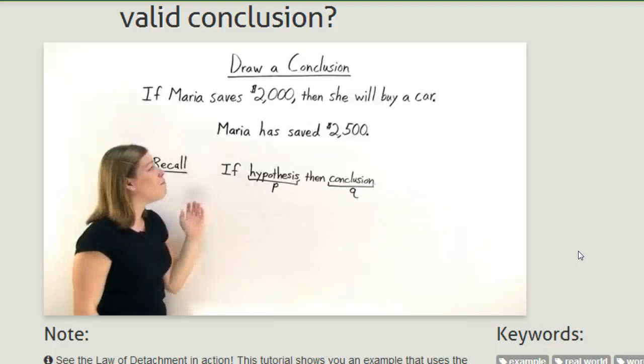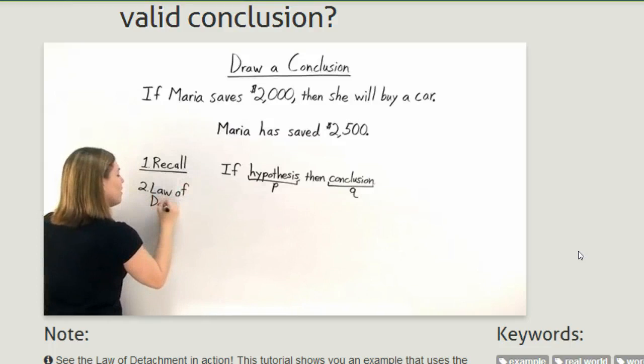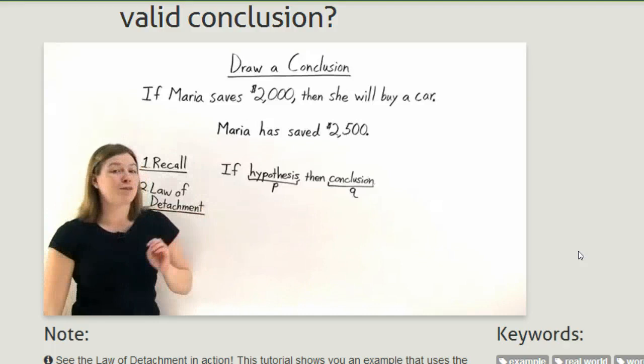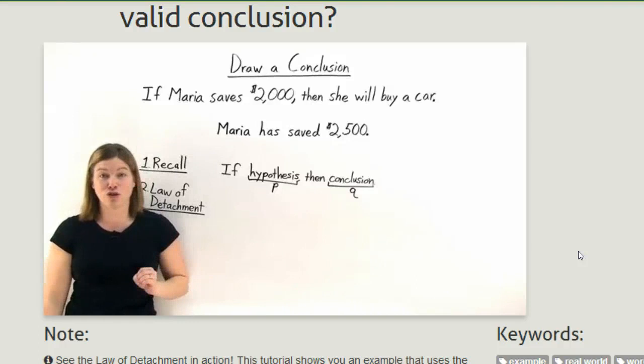Here we may be able to use the law of detachment to help us. So let's go ahead and recall this. The law of detachment helps us logically work through problems like this. This law of detachment says that for a true conditional statement, if we know the hypothesis is true, then we know the conclusion is true as well.